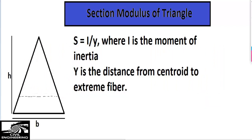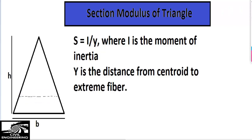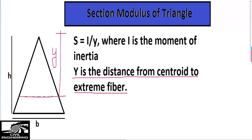There is some confusion with this variable y. Actually, y in this case is the distance from the centroid of the triangle — as I have shown here, this is the centroid — to the extreme fiber. So y represents that distance from the centroid to the extreme fiber.